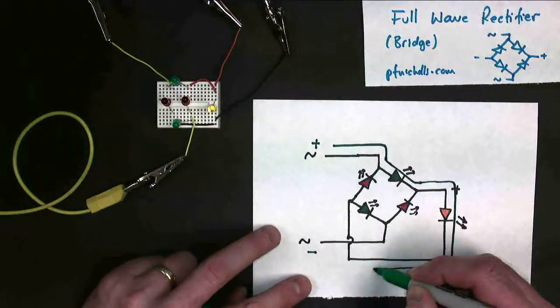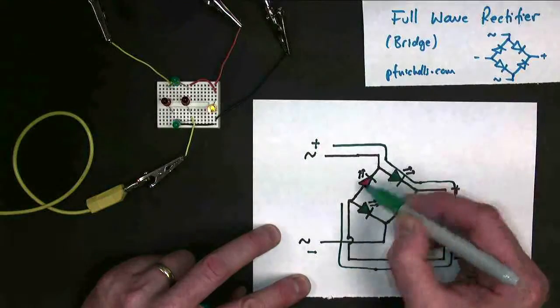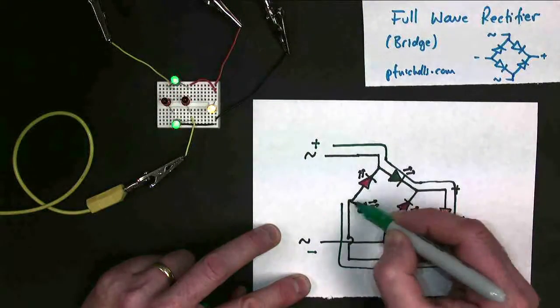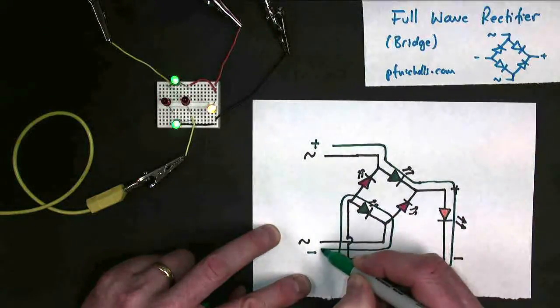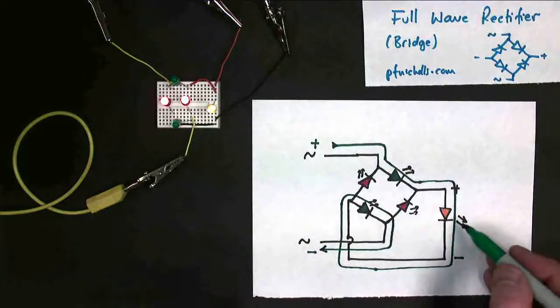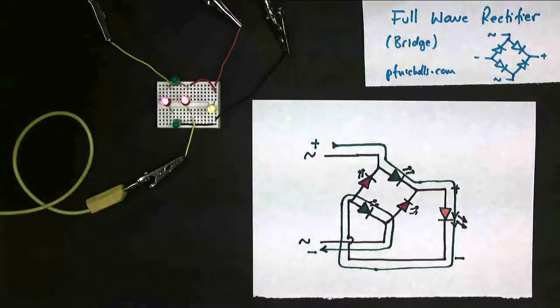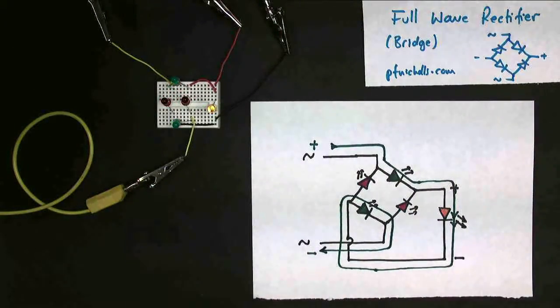It has to come along here. Now, it looks like it could go through both of these, but it can't go through this one, because this point here is a higher voltage. So it has to go back down through this one, back through this one, and along to there. So my current flows through the LED in that direction when this is positive and this is negative.